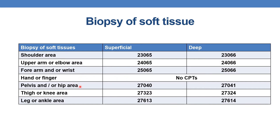Coming to pelvic and/or hip area: for superficial biopsy of soft tissue, report 27040; for deep biopsy, report 27041. For thigh or knee area, superficial biopsy is 27323, and deep biopsy is 27324. When it comes to leg or ankle area, for superficial biopsy of soft tissues the CPT is 27613, and for deep biopsy it is 27614.